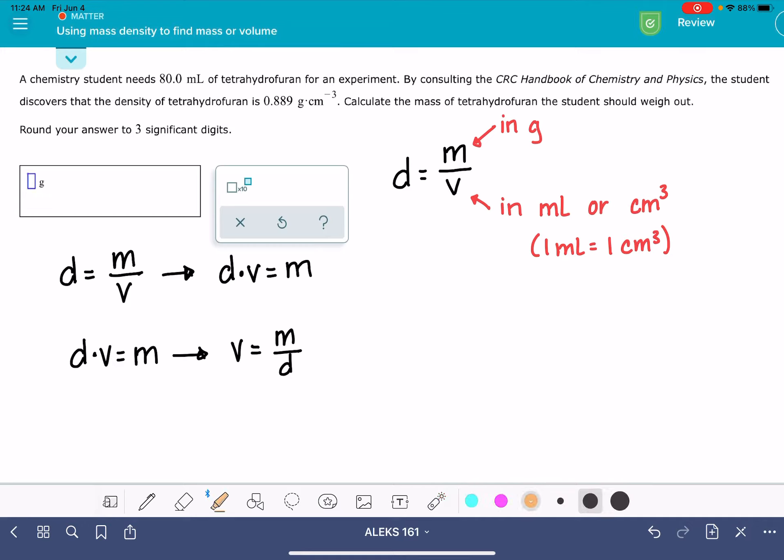we have been given the density right here, 0.889 grams per cubic centimeter, and we've also been given the volume 80 milliliters, and we're being asked to calculate the mass. So that means I want to use this form of the equation, which has mass isolated.